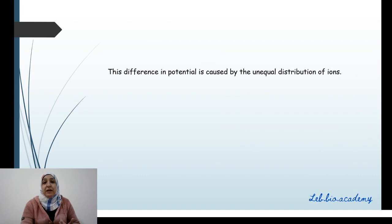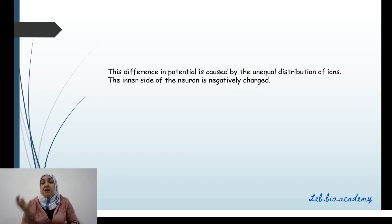In resting potential, this difference in charges between inside and outside of the fiber is caused by the unequal distribution of ions. Outside is positive and inside is negative. Inside is negative compared to outside. And the value of this difference is minus 70 mV.